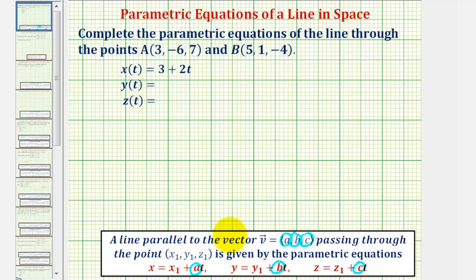And the coordinates of the point on the line (x₁, y₁, z₁) give us the constant in each parametric equation.